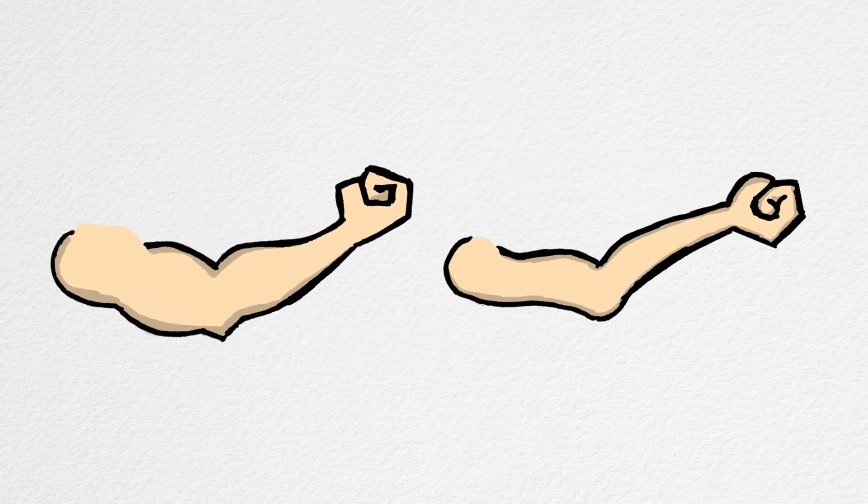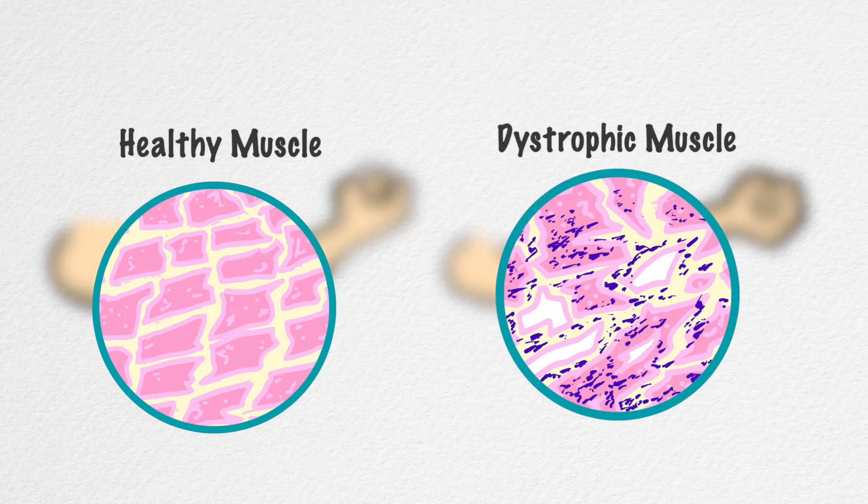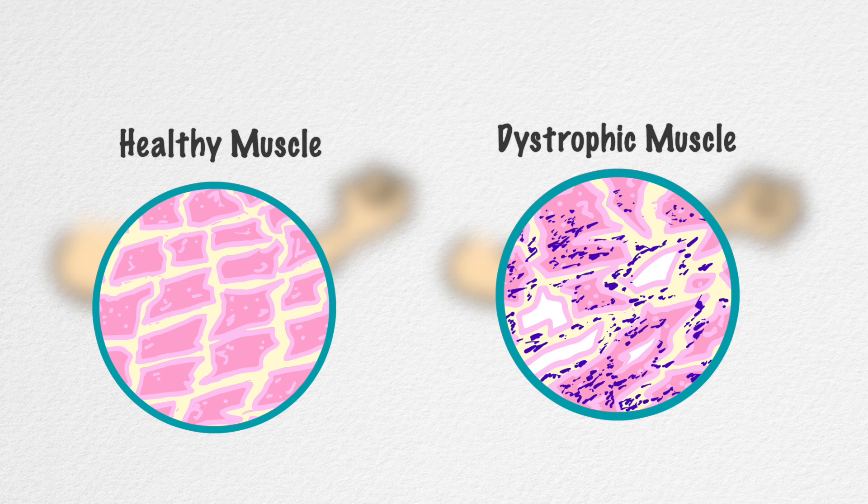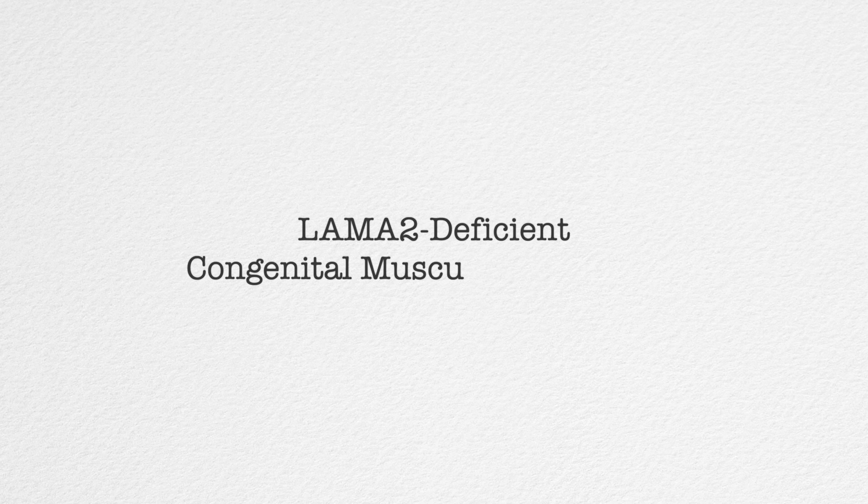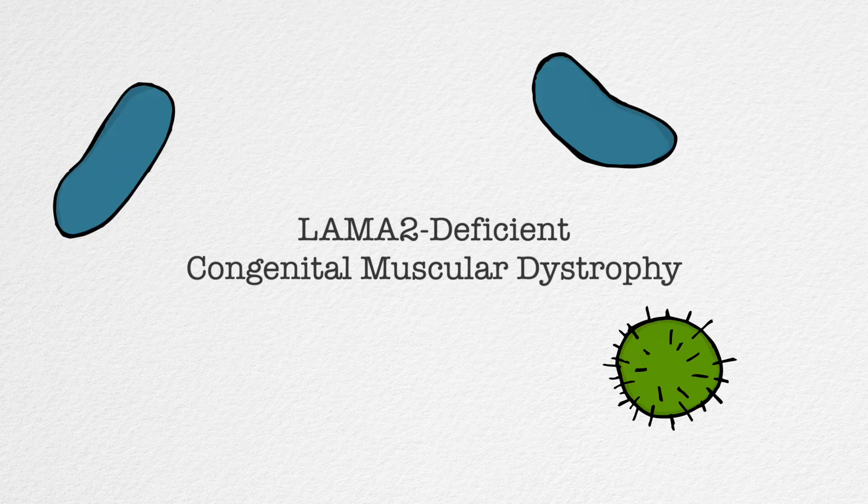Muscular dystrophies are characterized by progressive loss of muscle mass and function. In our study, we developed a new gene therapy approach for a rare subtype of muscular dystrophy called LAMA2-deficient congenital muscular dystrophy that may be applicable to a broad range of inherited and acquired diseases.